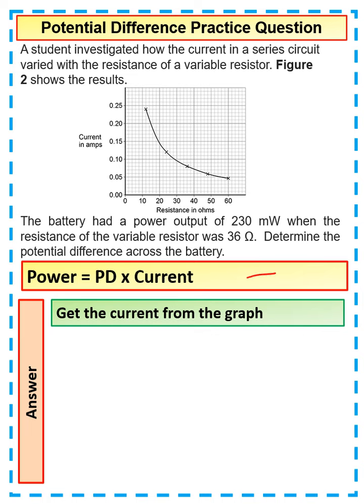Remember, look at the data you've got available to you. Use your equation sheet to see which equation you can use. We're going to use the equation power equals potential difference times by current. We're going to get the current from the graph.